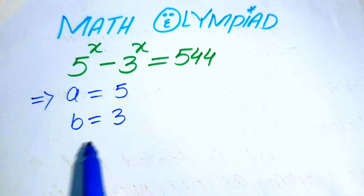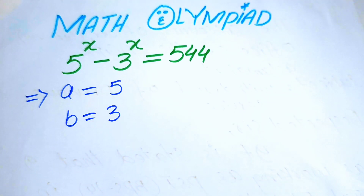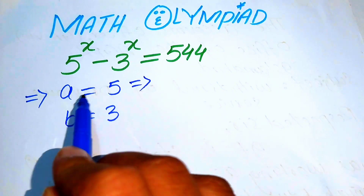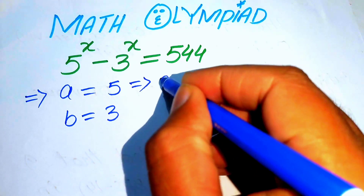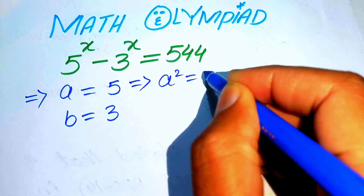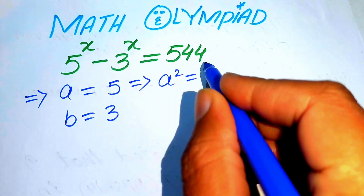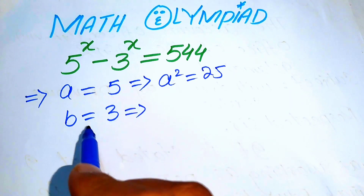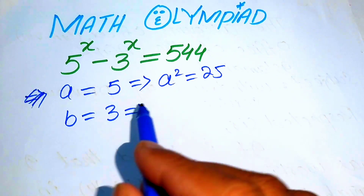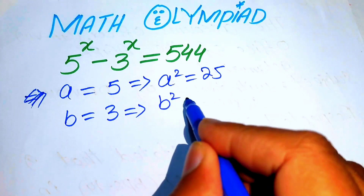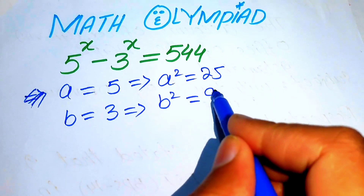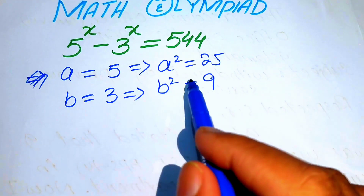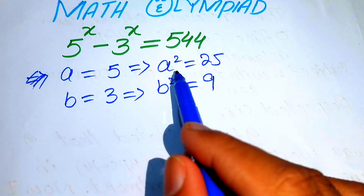So we take a equals 5 and b equals 3. In the next step we square both terms: a squared equals 5 squared equals 25, and similarly b squared equals 3 squared equals 9.